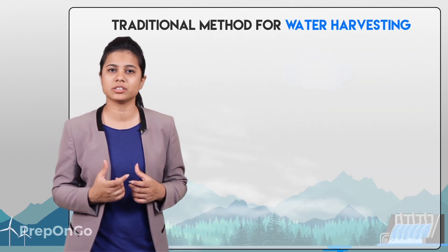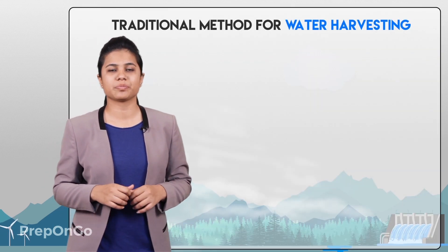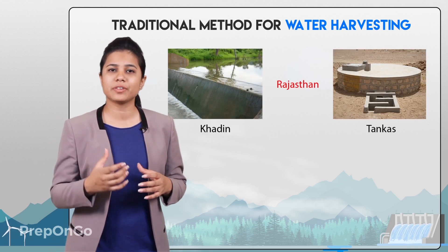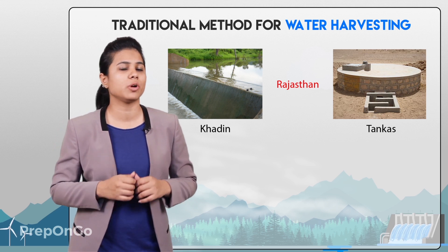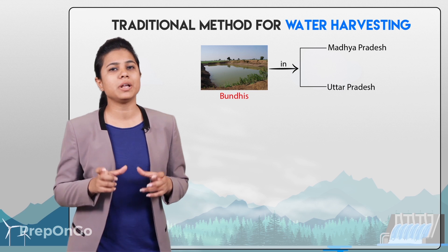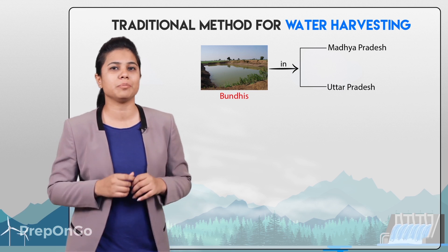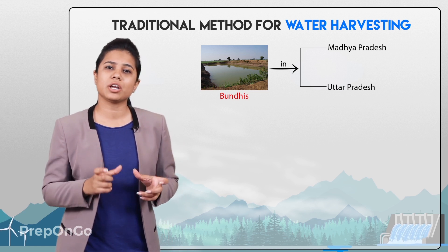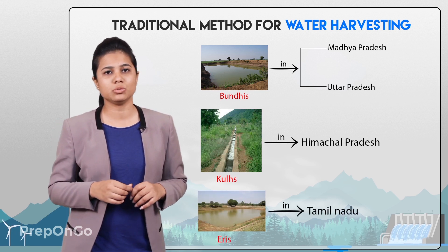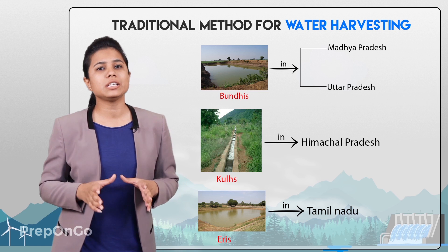To fight water scarcity, several states of our country have been using traditional practices for rainwater harvesting. For example, in rural areas of Rajasthan, people have constructed khadins and tankars for rainwater harvesting. In Madhya Pradesh and Uttar Pradesh, people have constructed bundis for the same purpose. Similar structures like khuls in Himachal Pradesh and iris in Tamil Nadu are also present. All these rainwater harvesting systems help in water recharging.